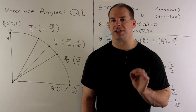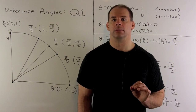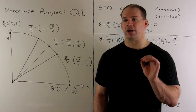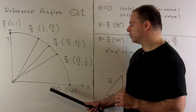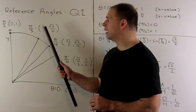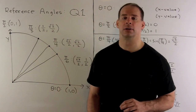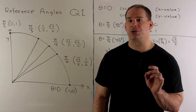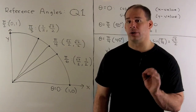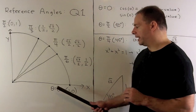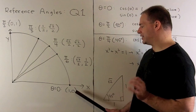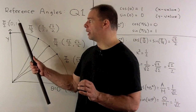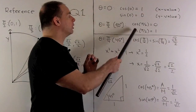The first step to memorizing values for cosine and sine starts with quadrant one. We call these angles reference angles, and we typically need to memorize the special cases θ = 0, π/6, π/4, π/3, and π/2. For θ = 0 and π/2 we don't need to do much work — we just pick off the x and y values on the unit circle. So for θ = 0, cosine equals one and sine equals zero; for π/2, cosine equals zero and sine equals one.